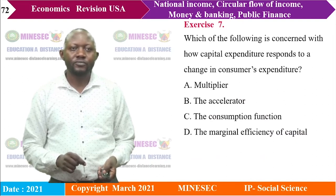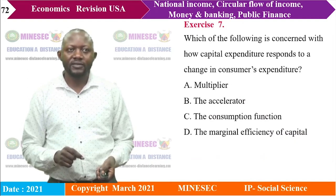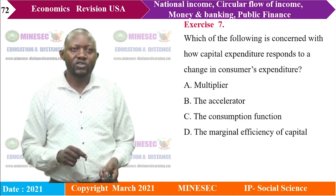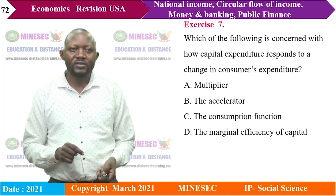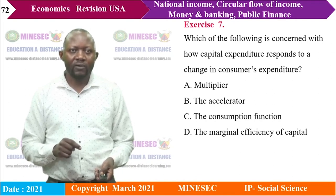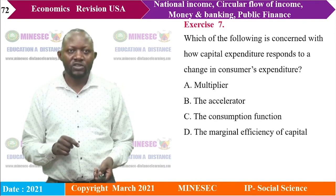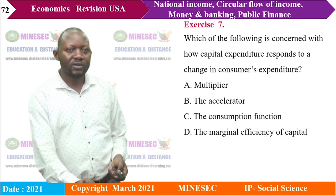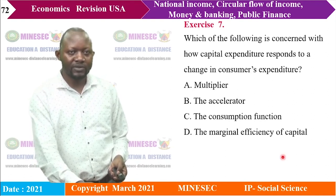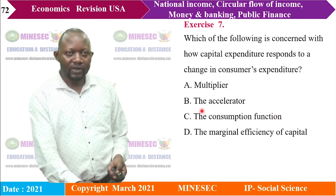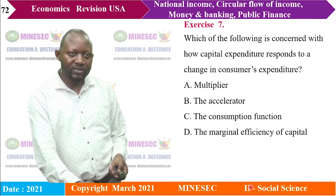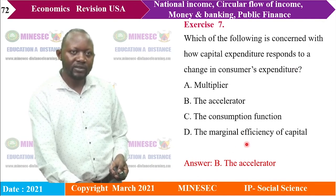Exercise 7: Which of the following is concerned with how capital expenditure responds to a change in consumers' expenditure? Options: A) multiplier, B) accelerator, C) consumption function, D) marginal efficiency of capital. The right answer is B — the accelerator, since it explains how capital expenditure (investment) responds to changes in consumer demand.